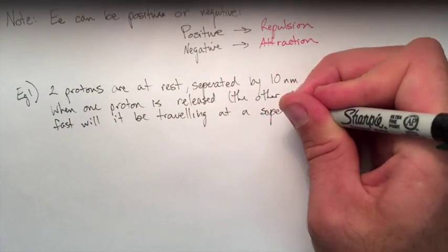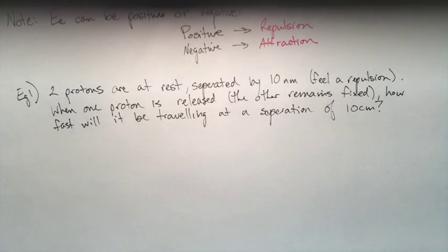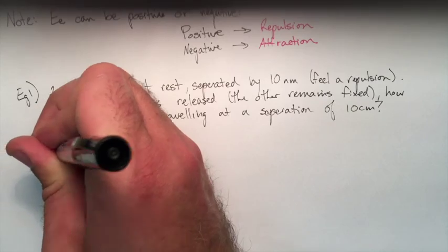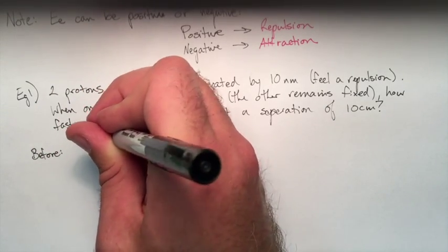We're going to draw a picture of this. Basically, we're just holding two protons close to each other. We let go of one, and we're going to calculate the speed it's going after the distance between them gets to 10 centimeters.